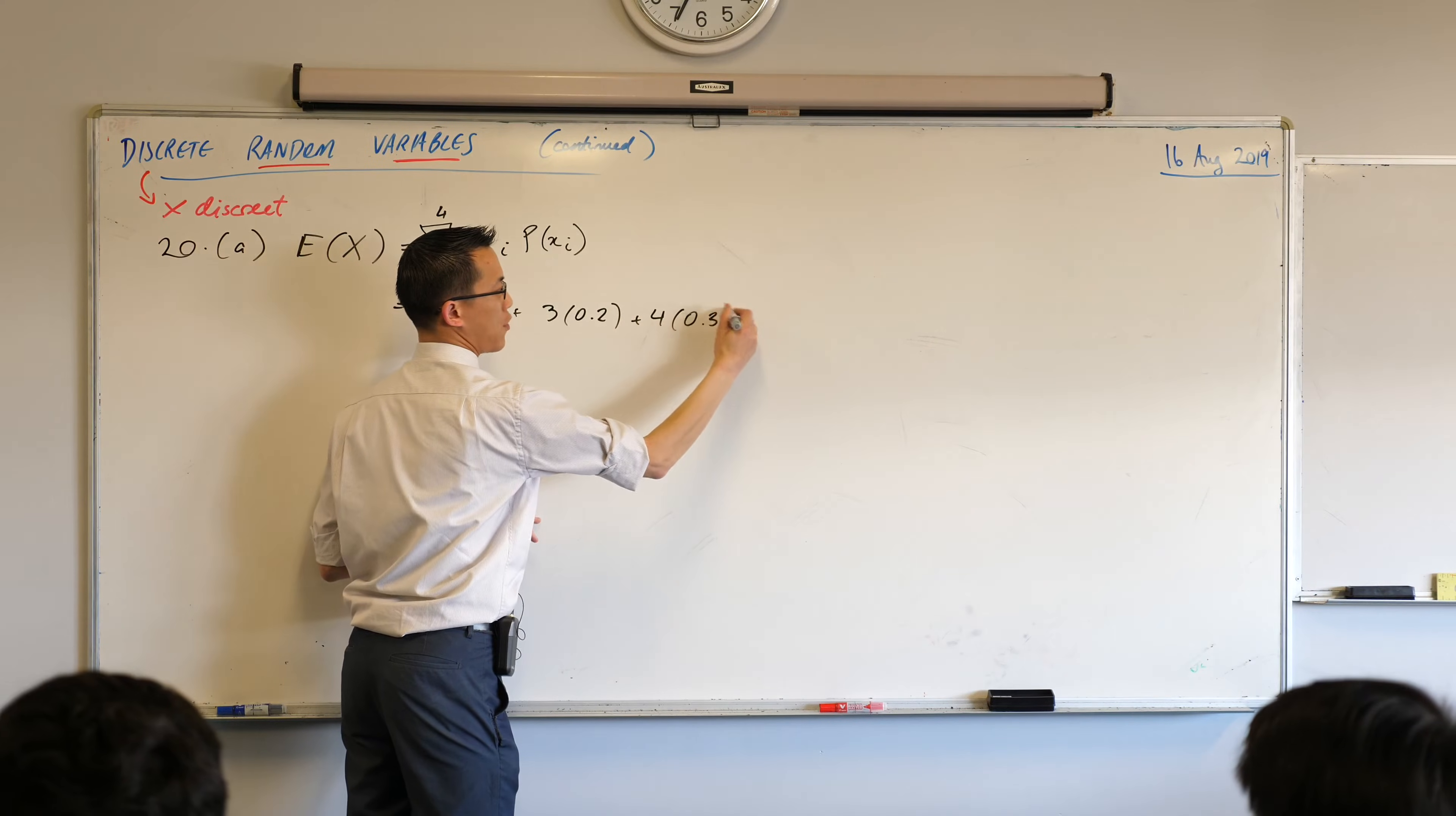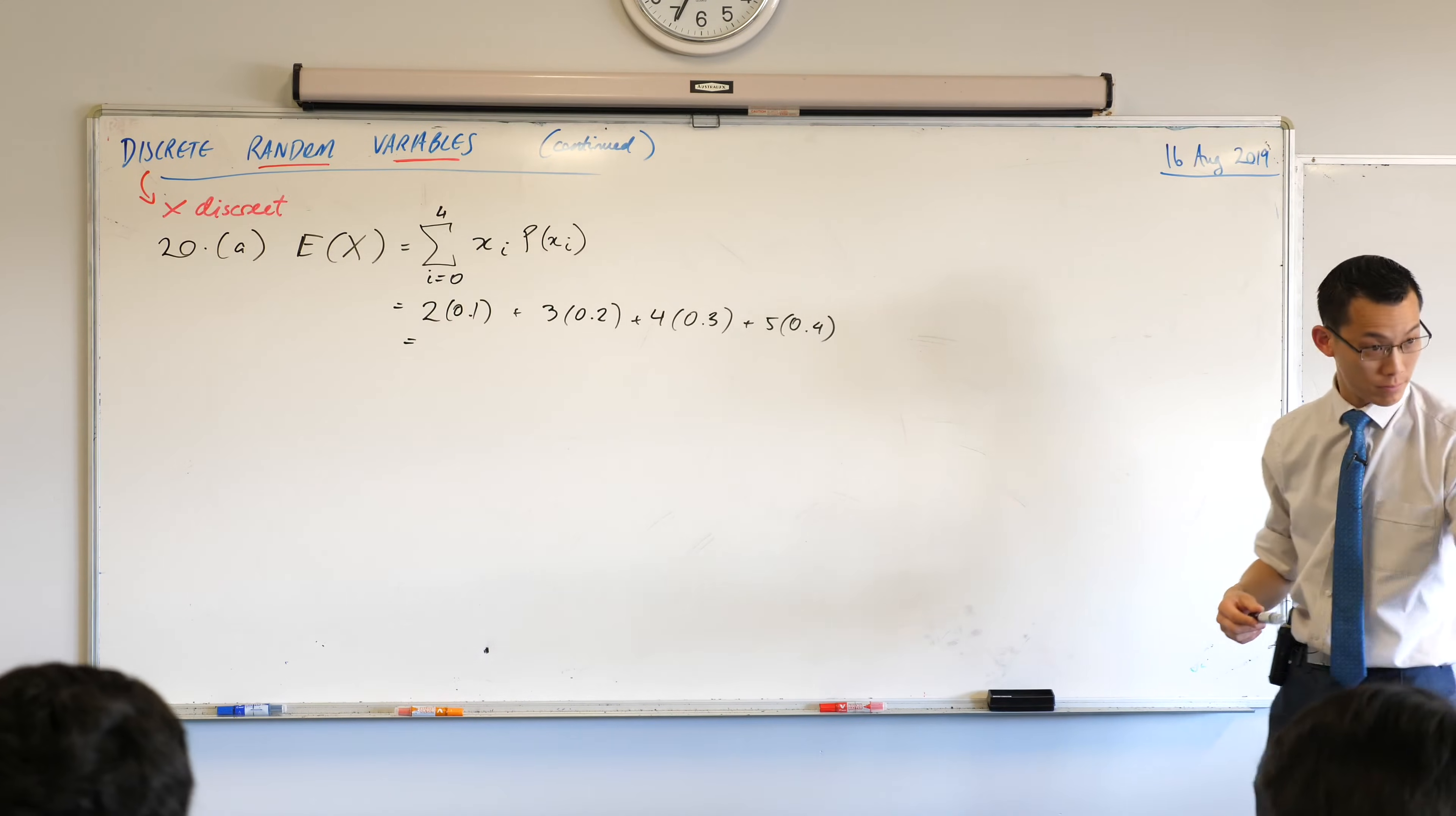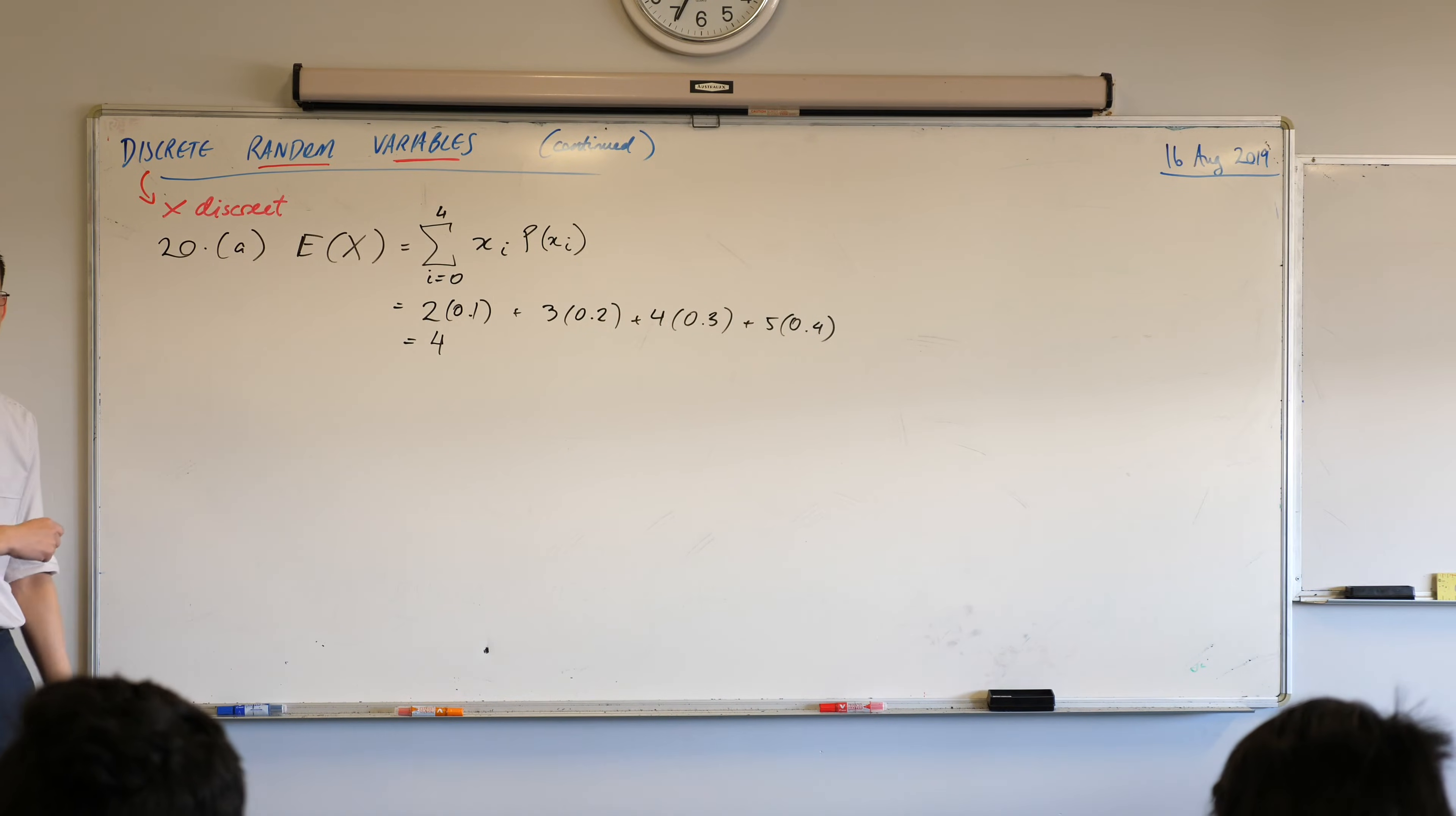And now is a good time if you haven't already to reach for your calculator because we're going to go ahead and calculate what this expected value is. I'll give you a sec to get to there. Or has anyone already got it? I think I calculated 4 beforehand. So please go ahead. You've got to make sure you do this, right? But you should get 4 once you've got that, right? So this is the expected value.